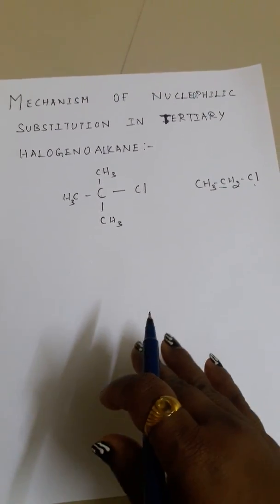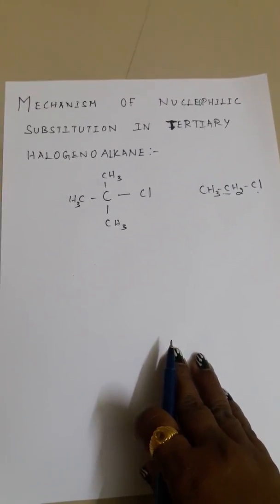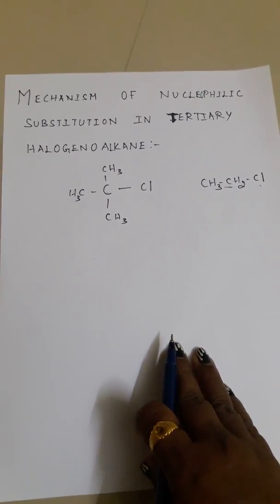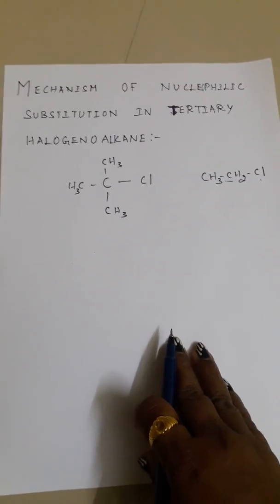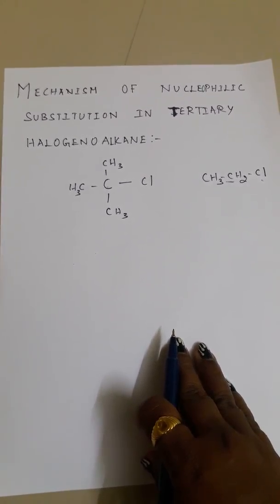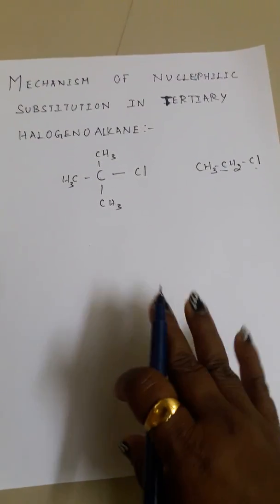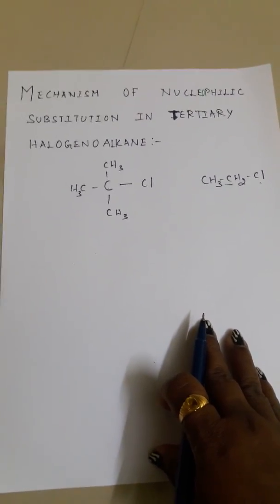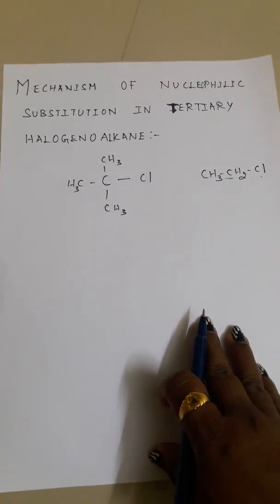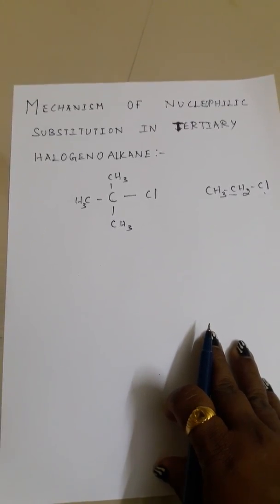By adding water, the haloalkane will not dissolve in water. That's the reason we are adding an equal amount of ethanol—50% water and 50% ethanol—because haloalkanes are insoluble in water.